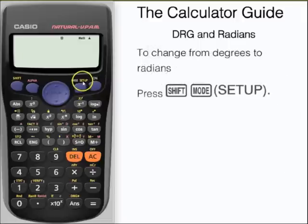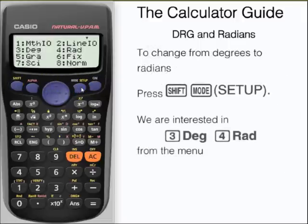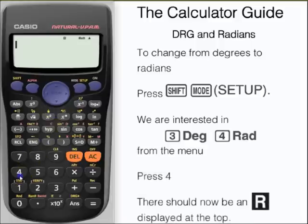We're going to change the calculator from degrees to radians now. We need to access the setup menu, so press shift and mode. Here's the setup. We're interested in the second line, 3 for degrees and 4 for radians. We want to change to radians, so press 4. We should see a little R displayed at the top now.